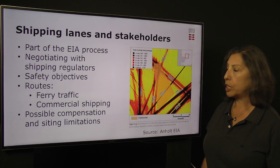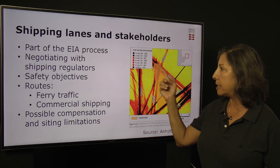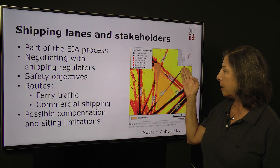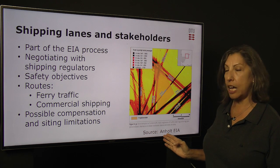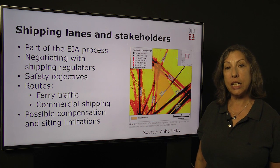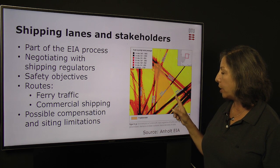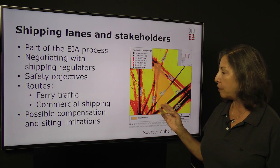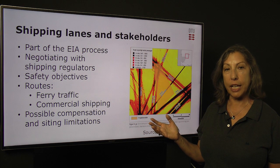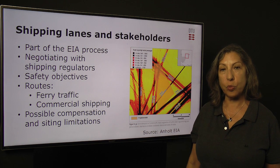Another interesting example in marine spatial planning is shipping lanes and the number of stakeholders involved. In this particular case, a ferry crossing between one side of the country is crossing right over the identified project area. This requires negotiating with shipping regulators to deal with safety objectives and competing uses of the ocean. The ferry route has to be rerouted around the project, and the developer has to compensate the ferry company for this additional route, which would use more energy than if they crossed over the site. This involves siting limitations and negotiations with regulators, which can get quite complicated.